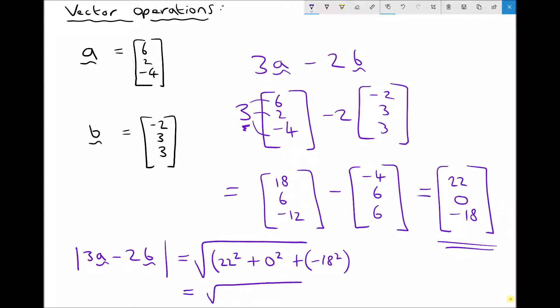Which is the same as the square root of 808 which is 28.425. So in this video we've looked at some alternative notation for our vectors. And we've also looked at some of the basic operations that we can perform on our vectors.